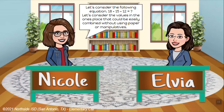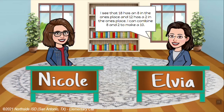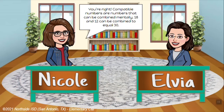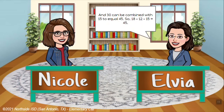Let's consider the following equation: 18 plus 15 plus 12 equals something. Let's consider the values in the ones place that can be easily combined without using paper or manipulatives. I see that 18 has an 8 in the ones place and 12 has a 2 in the ones place — I can combine 8 and 2 to make a 10. Compatible numbers are numbers that can be combined mentally. 18 and 12 can be combined to equal 30, and 30 can be combined with 15 to equal 45. So 18 plus 12 plus 15 equals 45.